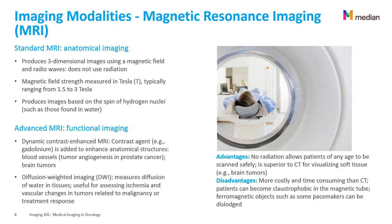The standard magnetic resonance imaging modality, commonly known as MRI, provides anatomical imaging. It produces three-dimensional images using a magnetic field and radio waves, and does not use radiation, which is its biggest advantage. The magnetic field strength is measured in Tesla, typically ranging from 1.5 to 3 Tesla. MRI produces images based on the spin of hydrogen nuclei, such as those found in water. Advanced MRI provides functional imaging. Two main MRI sequences are often used: dynamic contrast-enhanced MRI, where a contrast agent is injected to enhance anatomical structures and make blood vessels more visible, allowing tumor angiogenesis to be followed in cancer patients; and diffusion-weighted imaging, or DWI, which measures the diffusion of water in tissues and is useful to assess ischemia and vascular changes in tumors related to malignancy or treatment response.